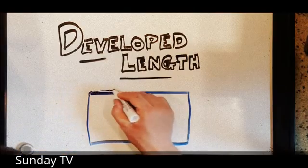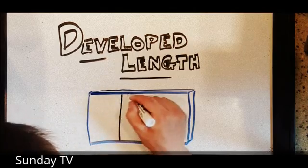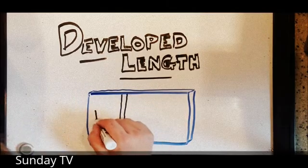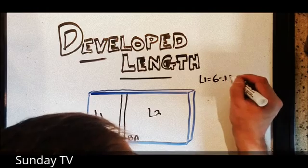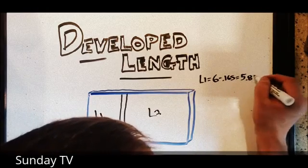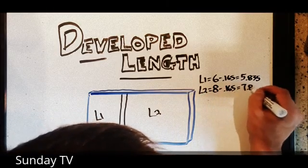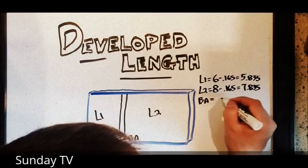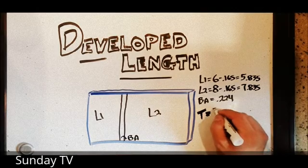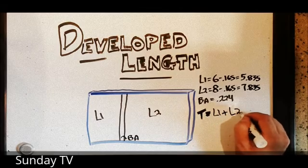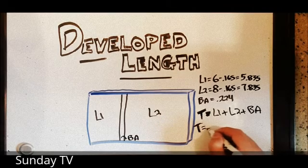So we have the two individual flat sections, and we have the bend allowance. There's our bend allowance BA, and we have leg one and leg two. So leg one is the desired length, or the drawing length, of six minus 0.165. The other leg is eight minus 0.165. And by the bend allowance chart, we found out that our bend allowance is 0.224. So the total length is the sum of length one plus length two plus our bend allowance.